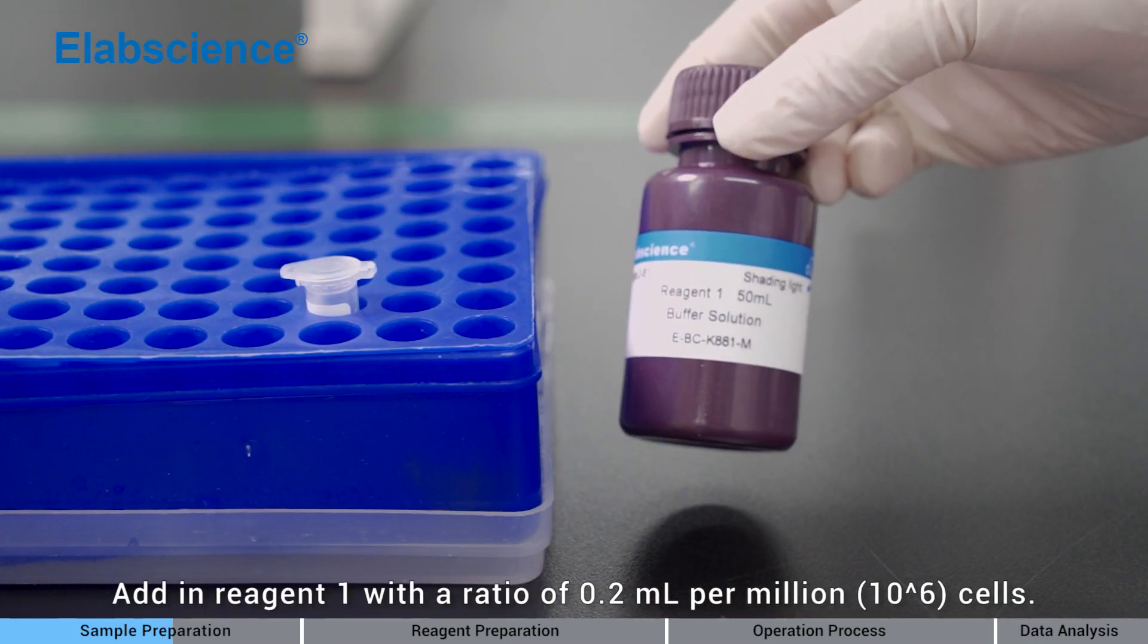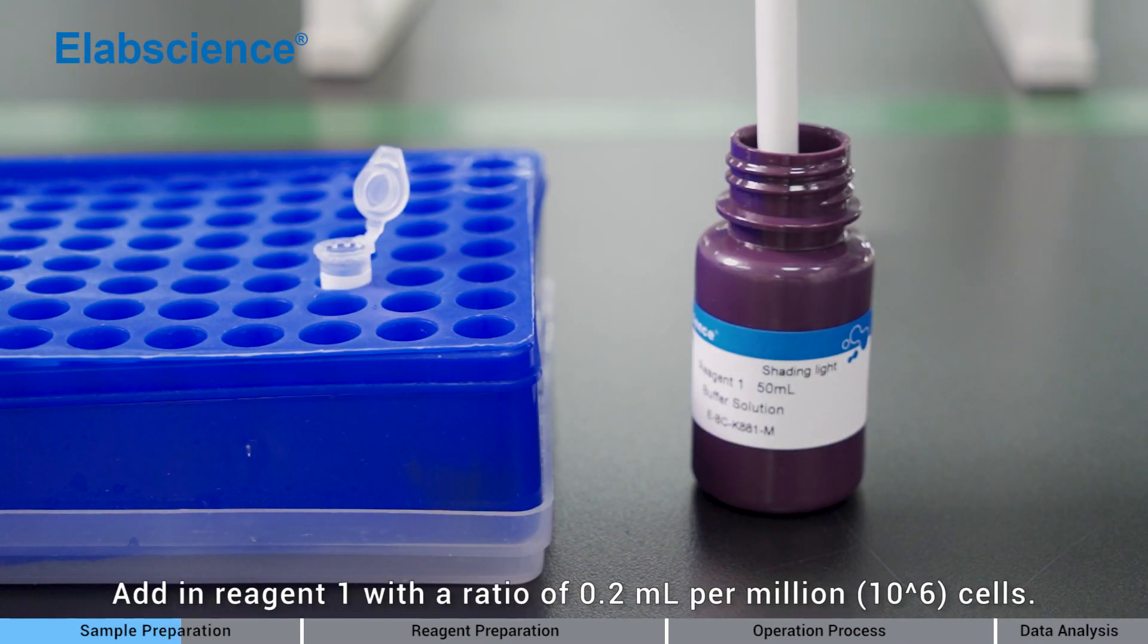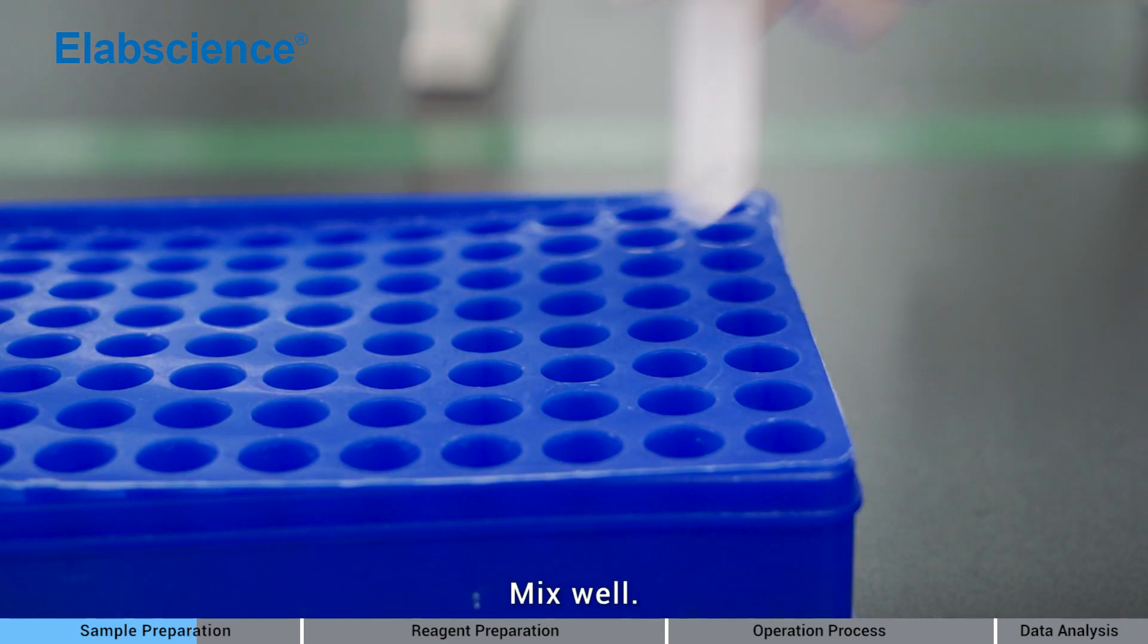Add in reagent 1 with a ratio of 0.2 ml per million cells. Mix well.